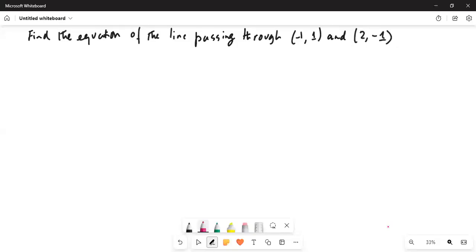It says, find the equation of the line passing through (-1, 1) and (2, -1).